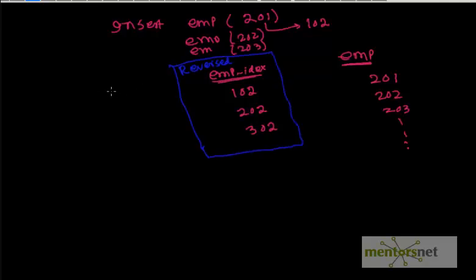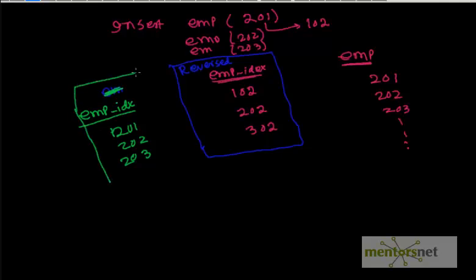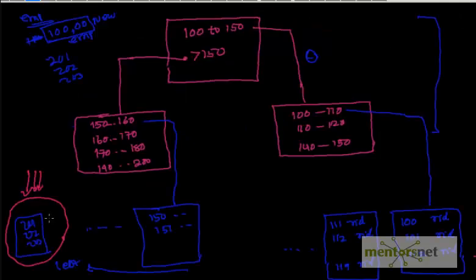If you do not reverse it, what should have been? If you don't reverse, employee_idx should be 201, 202, 203 and so on. This scenario is no reverse. If you do not reverse the value of employee ID, then you should have stored this in the B-tree: 201, 202, 203. So they are going to come to the same block here.